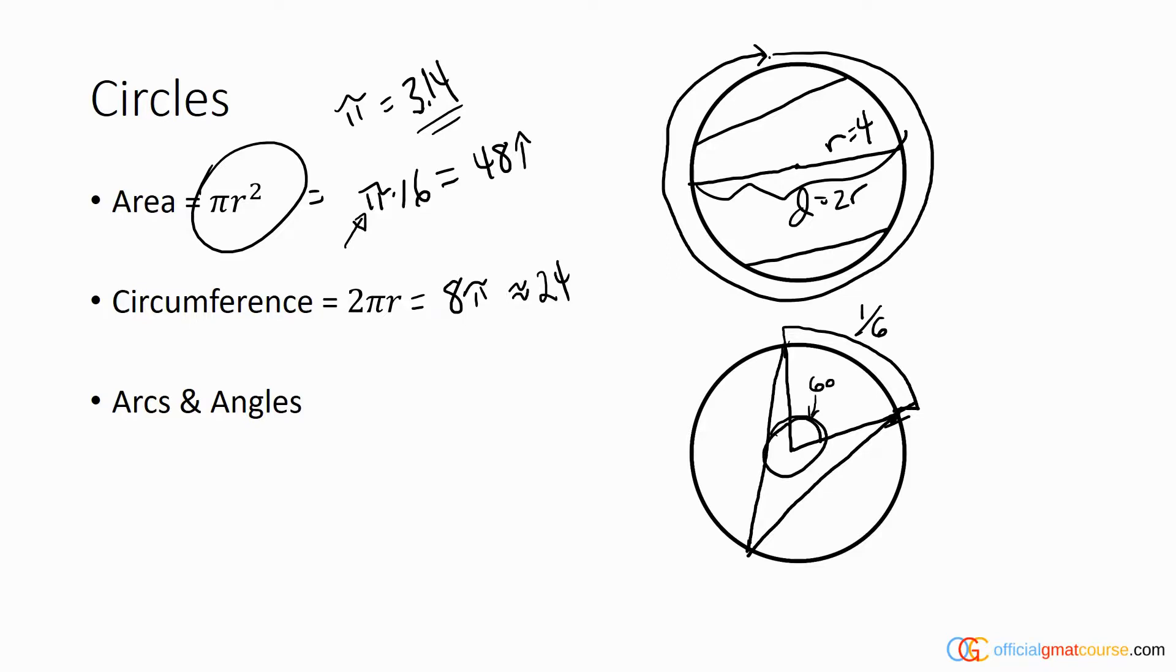Now the angle that's created when you take this arc and connect it to a point opposite of that arc is going to be half of what it would have been if you connected it to the center. So it's going to be one half of 60 degrees, which means it's 30 degrees.